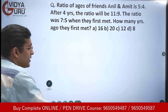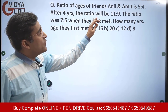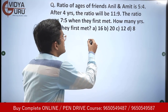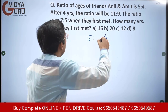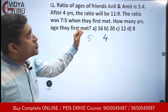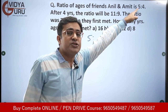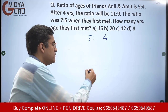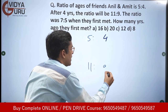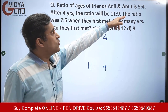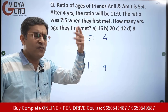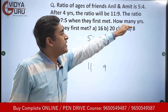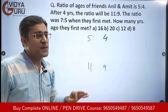Now let's move on to the next question. The question says: the ratio of ages of friends Anil and Amit is 5:4. After four years, the ratio will become 11:9. When they first met, the ratio was 7:5. We have to find out how many years ago they first met.